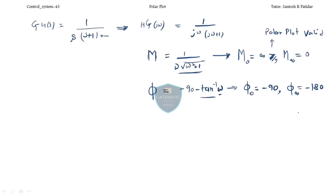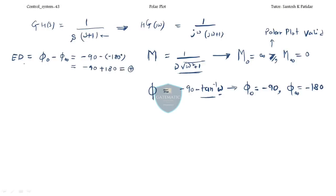Now find the ending direction and starting direction. Ending direction: compute φ(0) minus φ(infinity) = minus 90 minus (minus 180) = plus 90 degrees. Since this is positive, the ending direction will be clockwise. For starting direction, it is always given by finite poles or zeros.